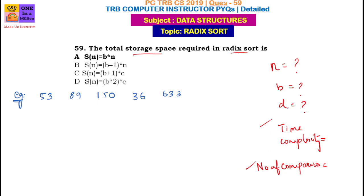This is an example. Radix sort will be clear. If you want to understand radix sort, you will need to compare the digits. For example, bubble sort gives 53 and 89. In radix sort, you compare numbers digit by digit — the ones place, the tens place, the hundreds place.